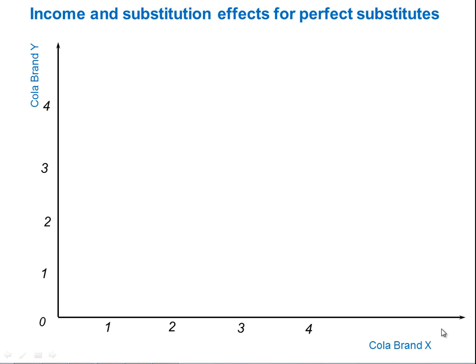Hello, my name is Kevin Hynde and in this brief presentation I just want to look at the income and substitution effects for perfect substitutes. But as you'll see, there is no income effect. The only effect from a price change is a substitution effect.